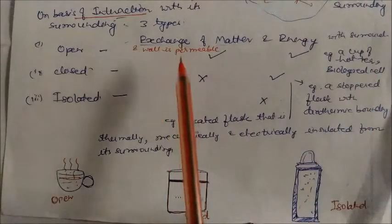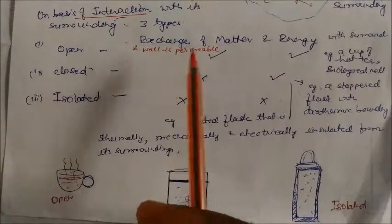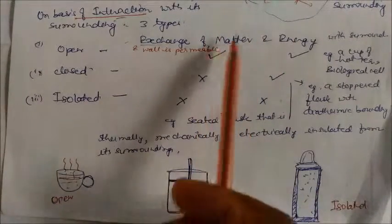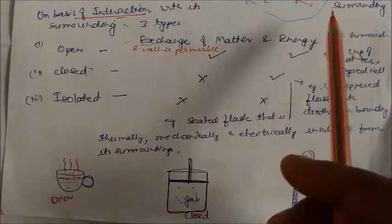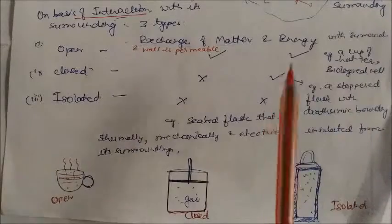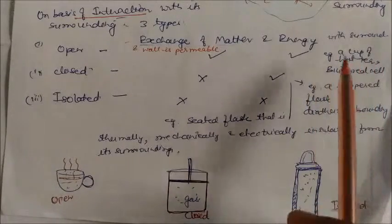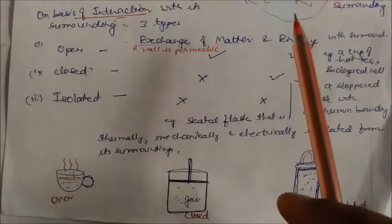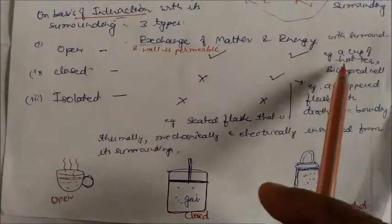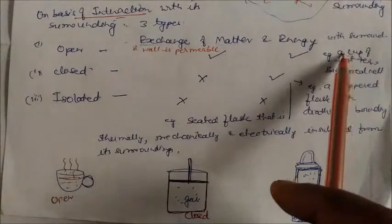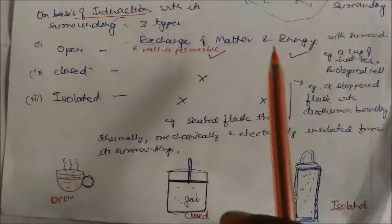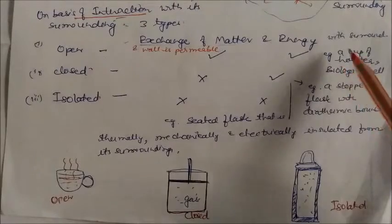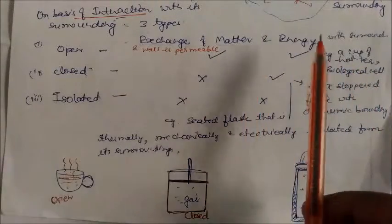The interaction is described in terms of exchange of matter and energy with the surroundings through the system's wall. In an open system, both matter and energy can be transferred. For example, a cup of hot tea: the tea converts to vapor form going to the surroundings, while energy also flows from the hot tea to the cooler surroundings. So both matter and energy are exchanged.